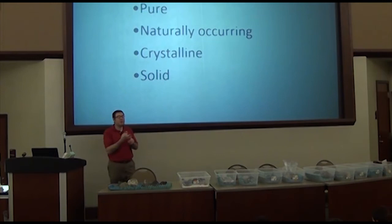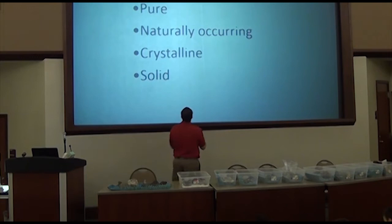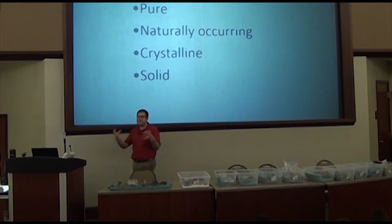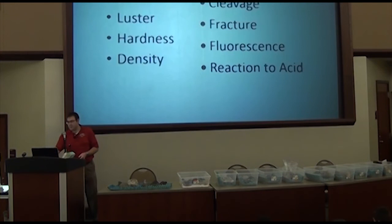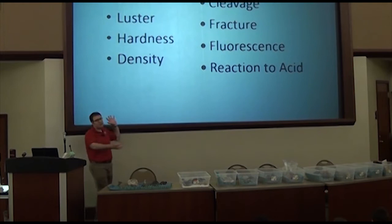A mineral is naturally occurring — something you found outside that formed naturally. It's also crystalline, meaning it doesn't have to have a visible crystal shape, but inside there is a chemically crystalline structure, and it has to be a solid — not a liquid or a gas.